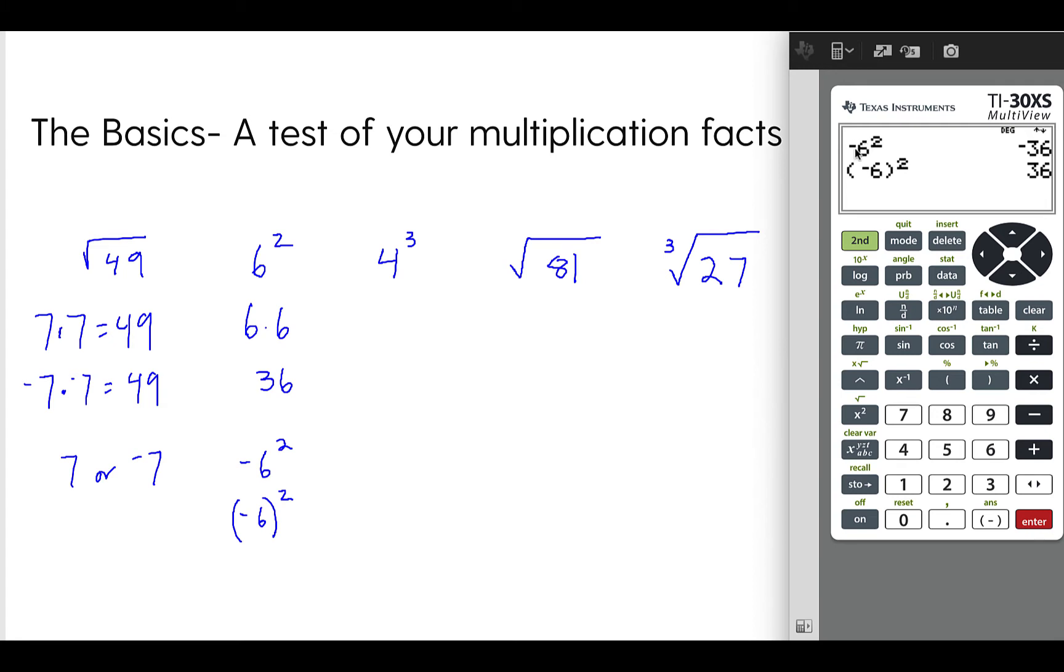Then you get the right answer. Because this first one, we have negative 6 squared with no parentheses. This is following PEMDAS. It's squaring, so it's getting 36, and then it's multiplying it by a negative to get negative 36. So you have to put the parentheses in to tell the calculator, here's the order by which you should do things. I have seen this type of thing come up on the GED.